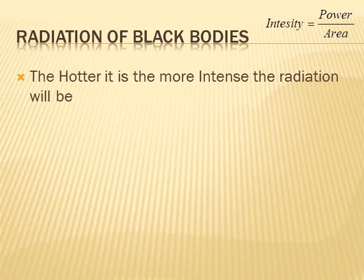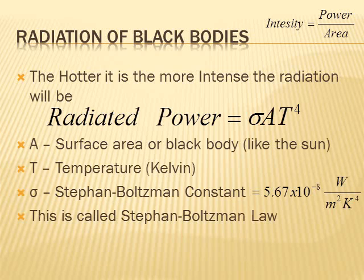We've seen that the hotter something is the more intense it will be. That's because the hotter something is the more power it will emit. There is an equation to calculate how much power a black body radiates. The equation is this, radiated power emitted by a black body like the Sun is equal to some constant called Stefan Boltzmann's constant, which is right here, this constant can also be found in your data booklet.